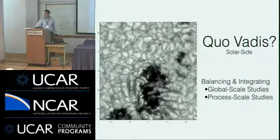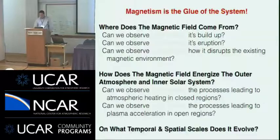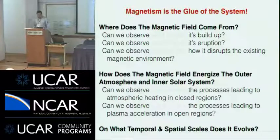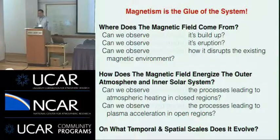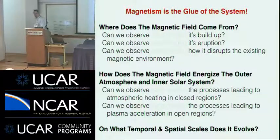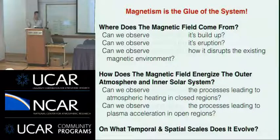How the Sun works at multiple scales, across scales — the glue of the whole system is the magnetic field, at least from the solar perspective, and it may well be at some levels in the magnetosphere.